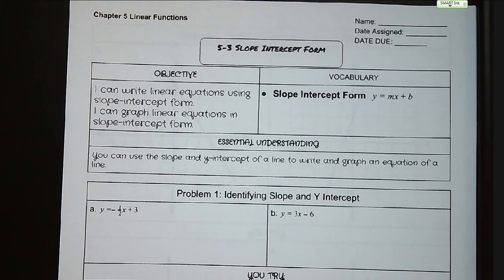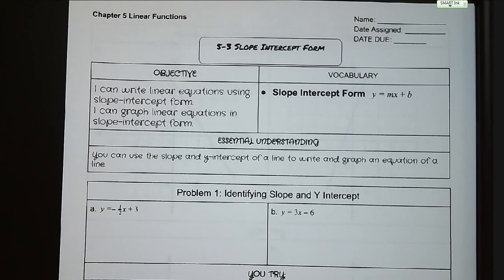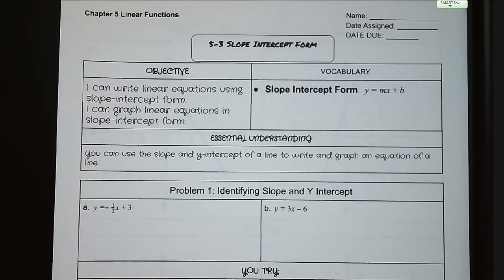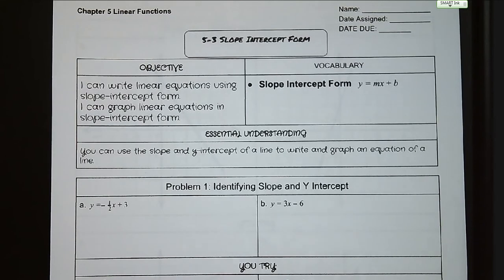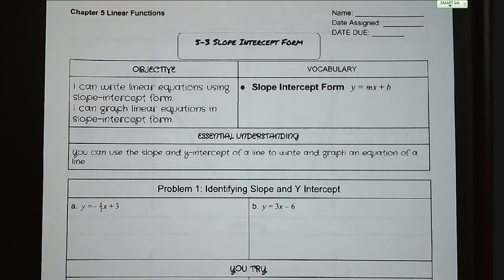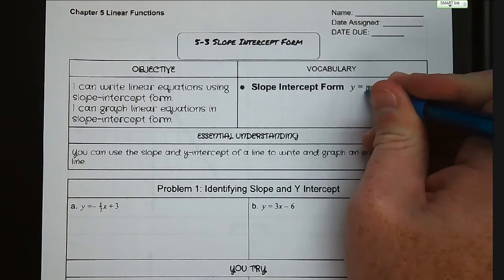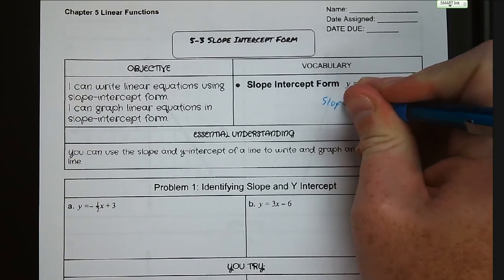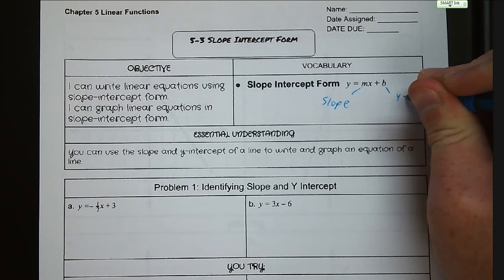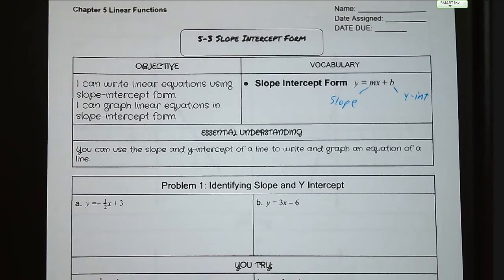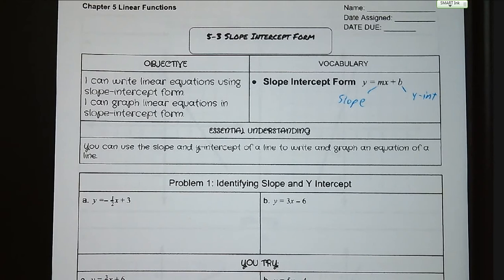Welcome to lesson 5.3: Slope-Intercept Form. Our objective for today is that I can write linear equations using slope-intercept form and that I can graph linear equations in slope-intercept form. Our vocabulary: slope-intercept form is y equals mx plus b, where m is our slope and b is our y-intercept. The essential understanding is that you can use the slope and y-intercept of a line to write and graph an equation of the line.